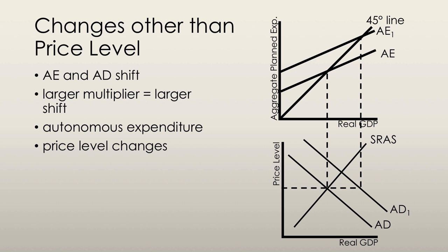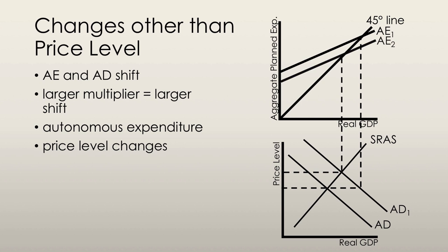The price level does rise eventually, and the aggregate expenditure curve must shift back downwards. The new aggregate demand curve intersects short-run aggregate supply. The steeper the slope of the short-run aggregate supply, the larger is the increase in the price level and the smaller is the multiplier effect on real GDP.